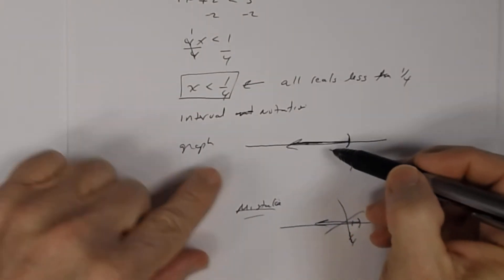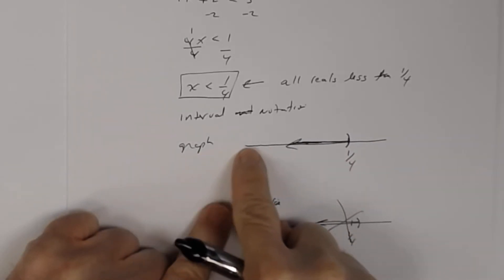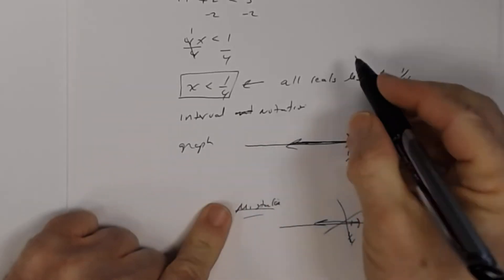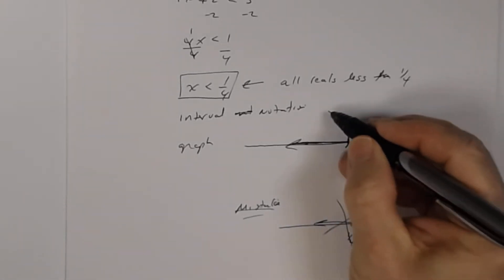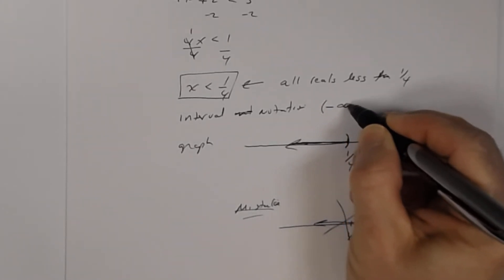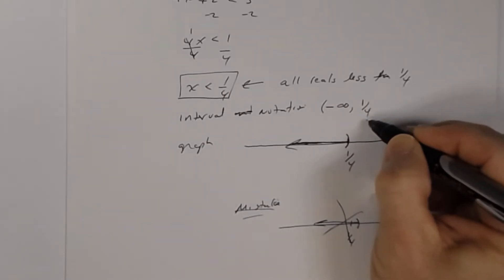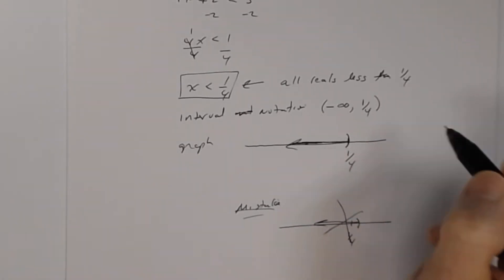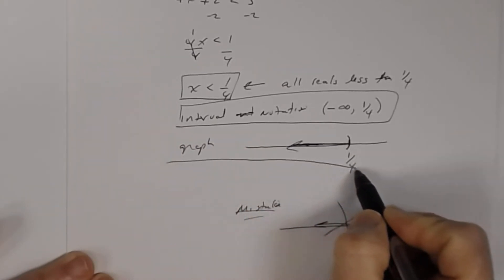When reading a graph for interval notation, always go from left to right. This arrow points toward negative infinity. Whenever you deal with infinity or negative infinity, always use parentheses. So the interval notation is: parenthesis, negative infinity, comma, 1/4, parenthesis — that's (-∞, 1/4).